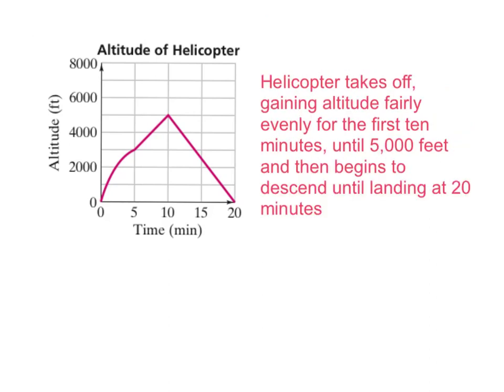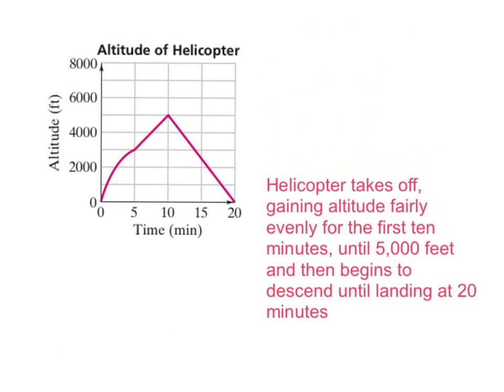So when we talk about relating graphs to events, we're talking about coming up with a real story describing what's going on with the shape of the graph, but always in relationship. Probably one of the most important things to notice is what is the measurement on each axis. So the altitude versus time is height and time.